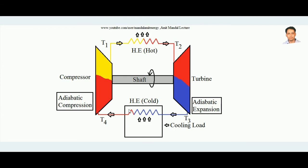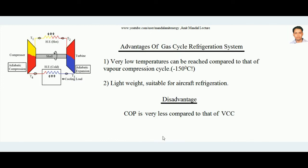The compressor runs by means of a shaft. Whatever work is developed by the turbine during adiabatic expansion is supplied back to the compressor. So practically a portion of the work input is recovered from the turbine for the operation of the compressor, since in the compressor work input is required while the turbine produces work output.